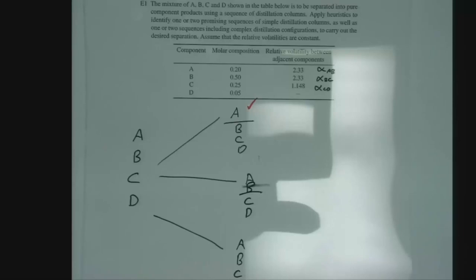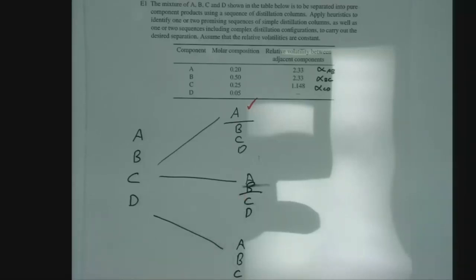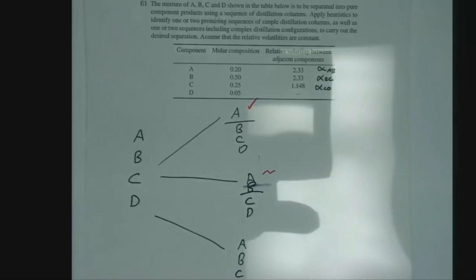What about the middle one, the split between B and C? It's potentially veering towards a 50-50 split — not perfect, it's about 70-30, but still a lot better than say 95-5. So potentially we'll say that one is viable, and we'll check the next one too.